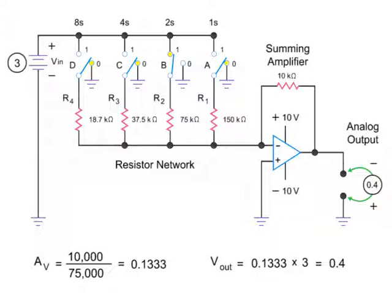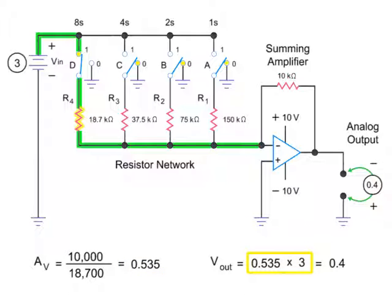Let's switch in another resistor value and look at what the voltage output would be. A binary input of 1000 closes switch D, resulting in an input of 18.7 kilohms. The gain then would be 0.535, giving a final output of 1.6 volts.